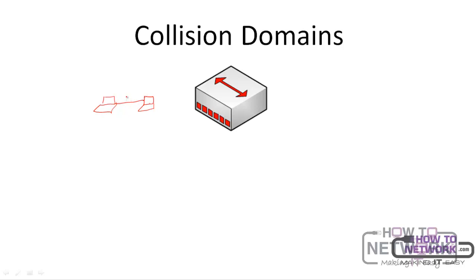If it's full duplex, they can send messages at the same time to one another. But what if you need to connect three devices together? In that case you could use a device called a hub. You connect one device to one port on the hub, a second device to another port, and a third device to another port. The problem with the hub is that it is a single collision domain.